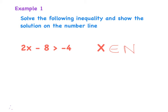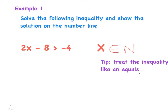Example one: solve the following inequality and show your solution on the number line. Here we have 2x minus 8 is greater than or equal to minus 4. For the purposes of solving, we want to find an answer for our variable x. The tip I would say is try and treat the inequality like an equals — if this were an equation, we would always try to find x by balancing.